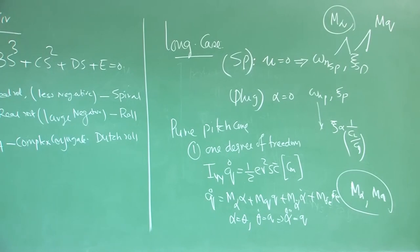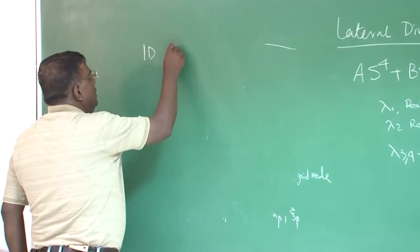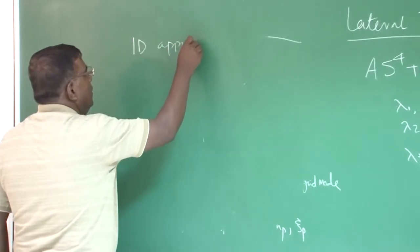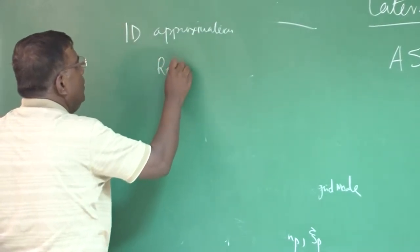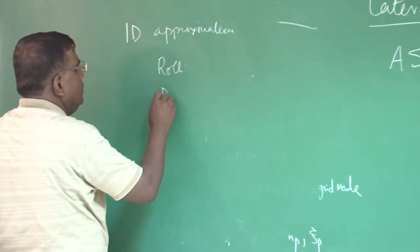From here, we clearly found that M_alpha, M_q are the critical parameters which decide omega_n and damping ratio. This is for longitudinal case.